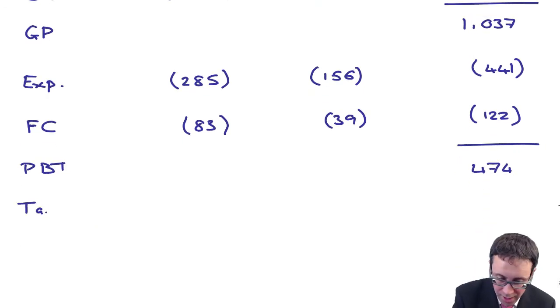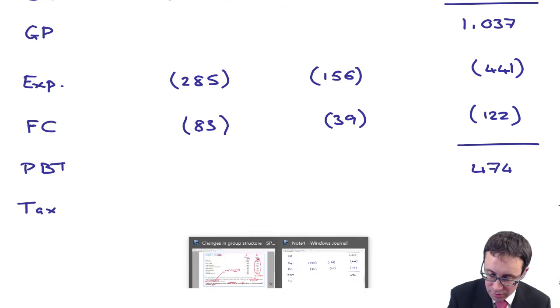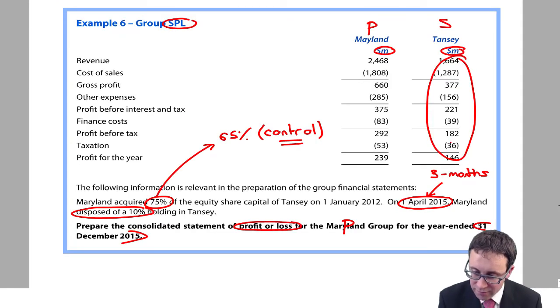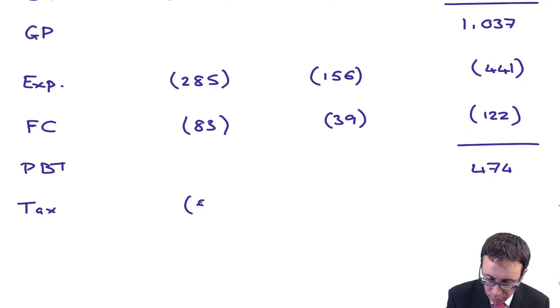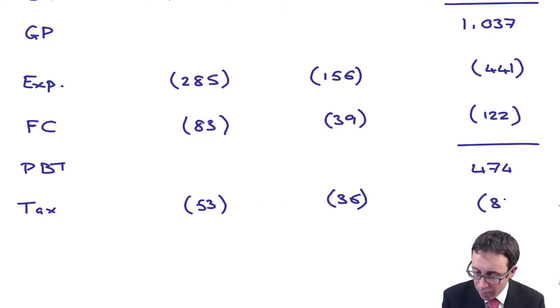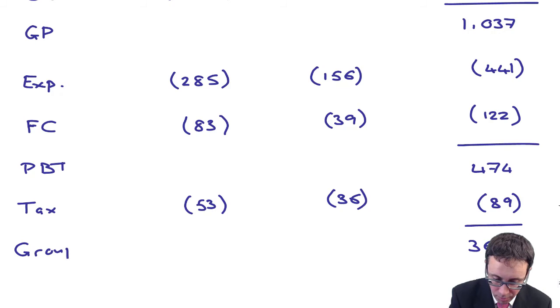We then go through and our tax figures. Tax 53 and 36. 89, isn't it? So that's 89 for my tax, which gives me 3, 6, 5 as my group profit for the year.